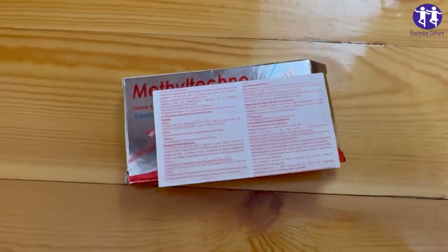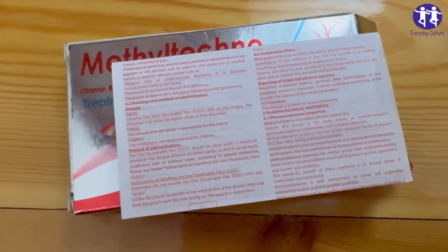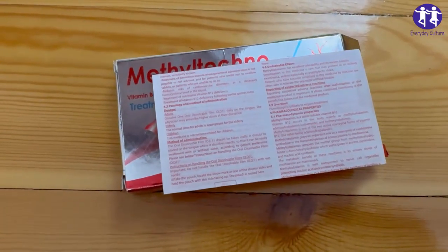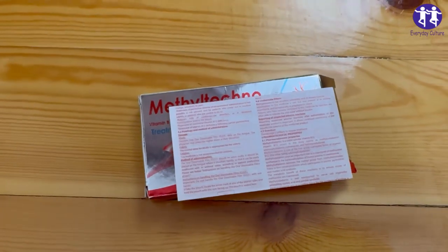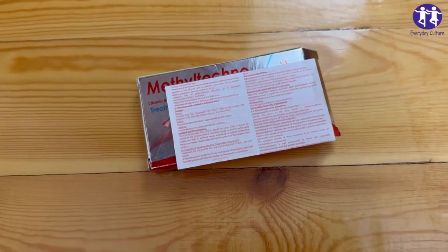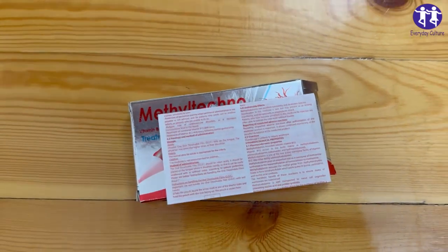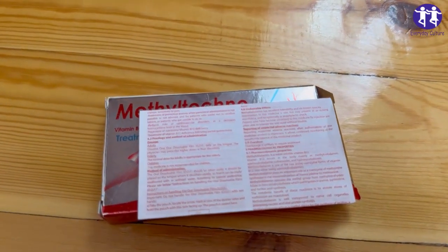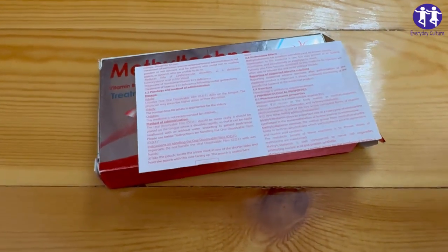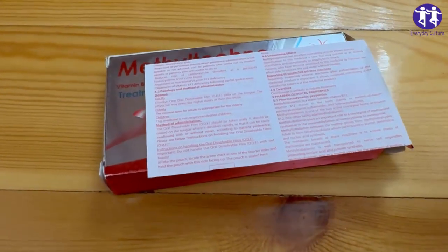Because one, refined carbohydrates processing removes naturally occurring thiamine. Two, alcohol, certain medications, and some teas block thiamine absorption. Three, stress, illness, and exercise increase thiamine requirements. A nutrition study found that for every 100 grams of refined carbohydrates consumed, your body requires approximately 0.5 mg additional thiamine.